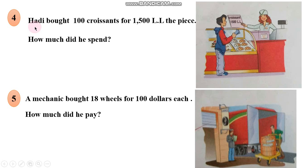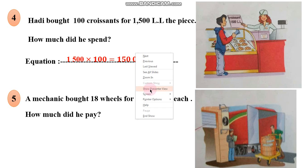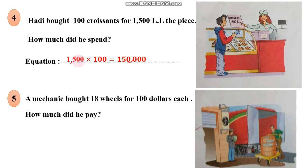Let's do number 4. He bought 100 croissants for 1,500 lira each piece. How much did he spend? He buys 100 for 1,500 each piece, so we should use multiplication. The equation is 1,500 times 100. 1,500 times 100 equals 150,000. The answer is: he spent 150,000 lira.